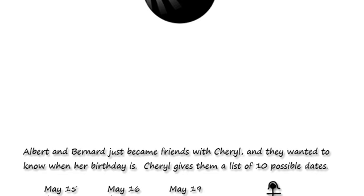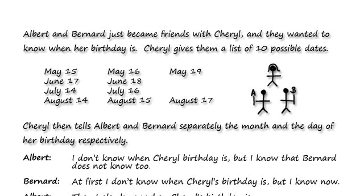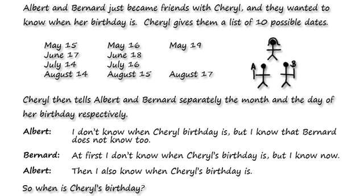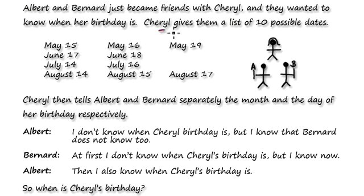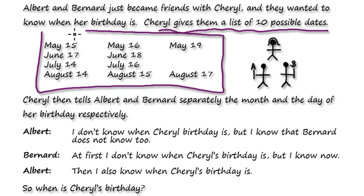Here's a problem that everyone's been crying about, and it goes something like this. Albert and Barnard — this is Albert, this is Barnard — they've just met Cheryl. They wanted to know Cheryl's birthday, and Cheryl gives them a list of 10 possible dates.